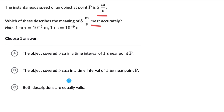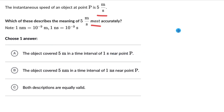Hopefully you have given this a shot. Now we need to choose one answer, so let's start reading the options. The first one says: object covered 5 meters in a time interval of 1 second near point P.